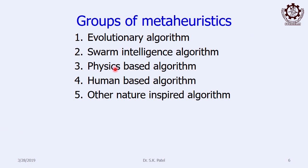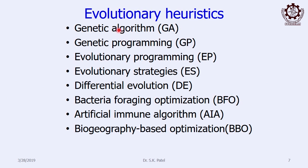Then comes physics-based algorithms, based on physical phenomena. Then human behavior-based algorithms, and then other nature-inspired algorithms. These are the five broad categories of various non-traditional optimization techniques. Under evolutionary, there are different techniques available — you just read them, you don't have to memorize all, just be aware that such techniques exist. Under our course, we will be discussing genetic algorithm; the others you just read and remember they are all based on evolutionary lessons.